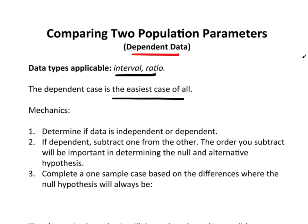Mechanically, it's really pretty straightforward. First, you need to determine if the data sets are independent or dependent. That's standard. Once you have more than one data set, that's one of the first things you have to do. If the two data sets happen to be dependent, then all you have to do is take one and subtract it from the other. The order you subtract will be important in determining the null and alternative hypothesis.